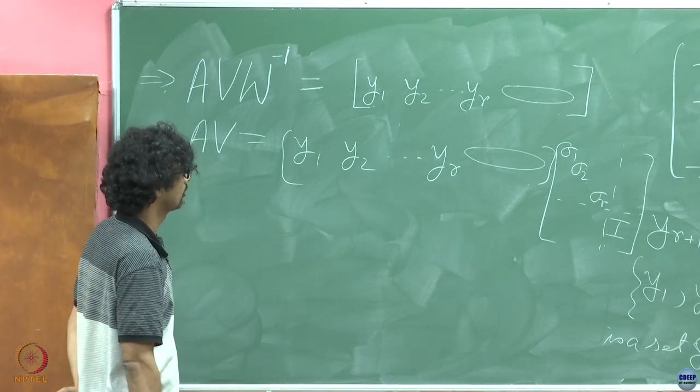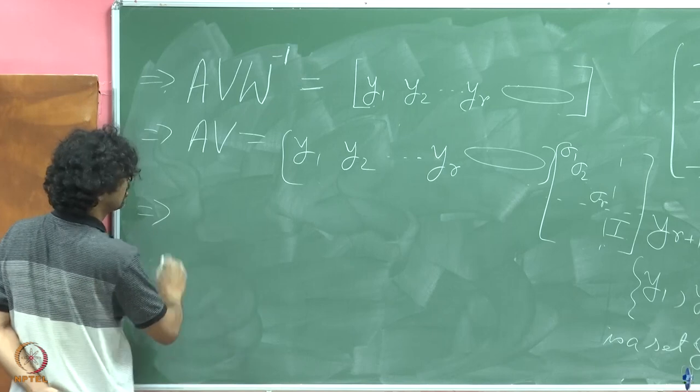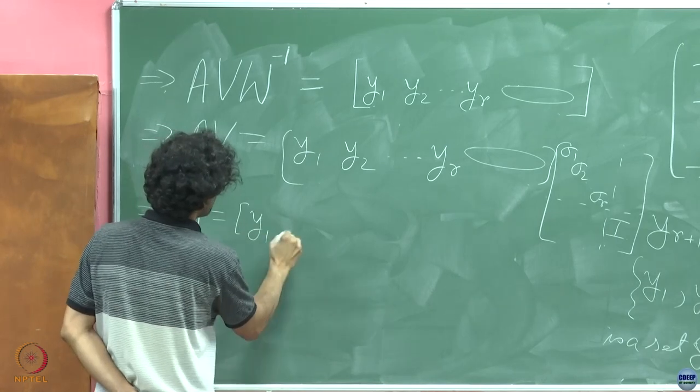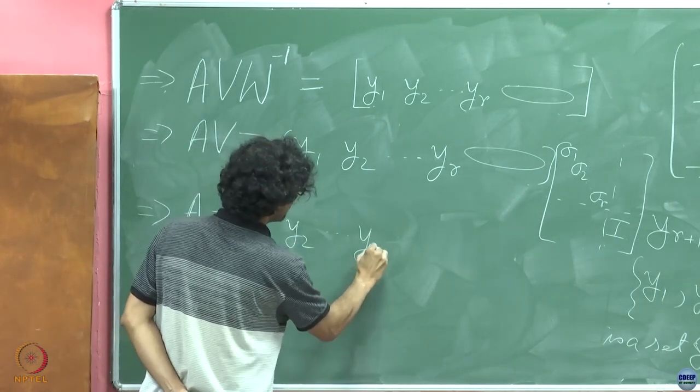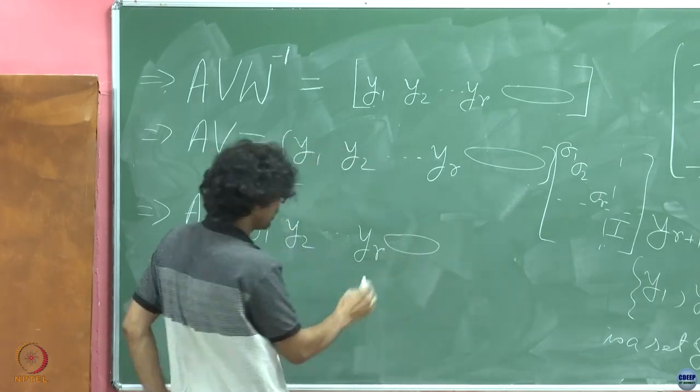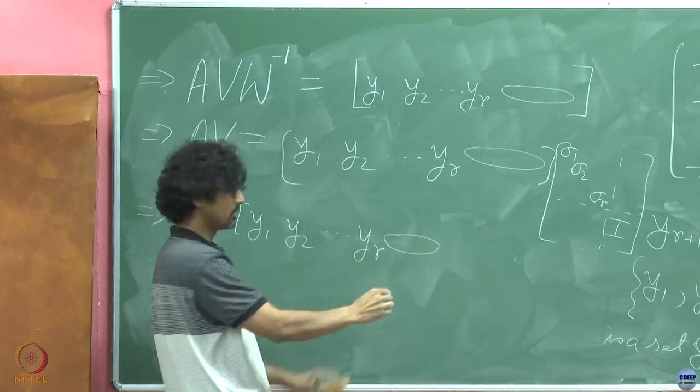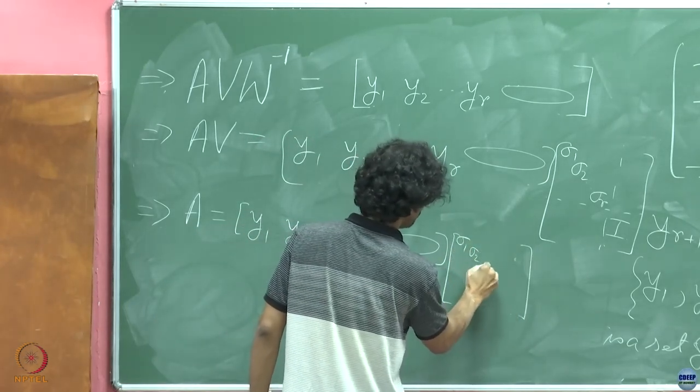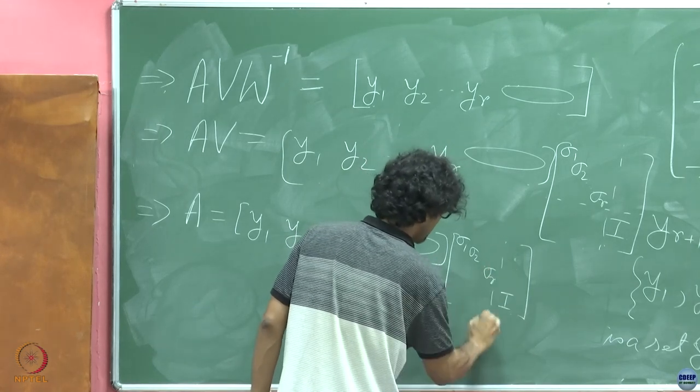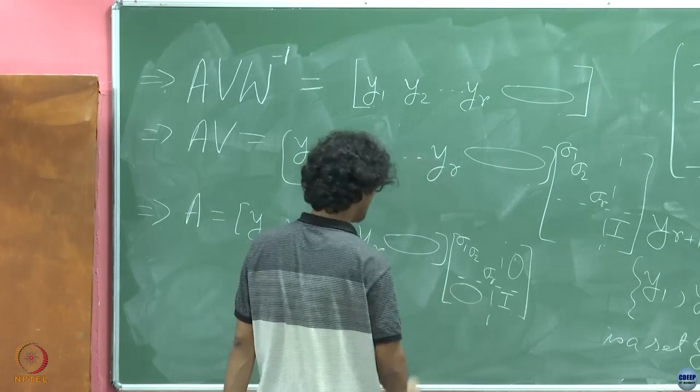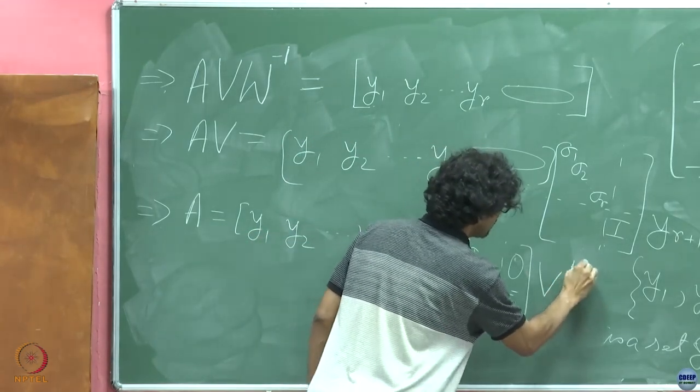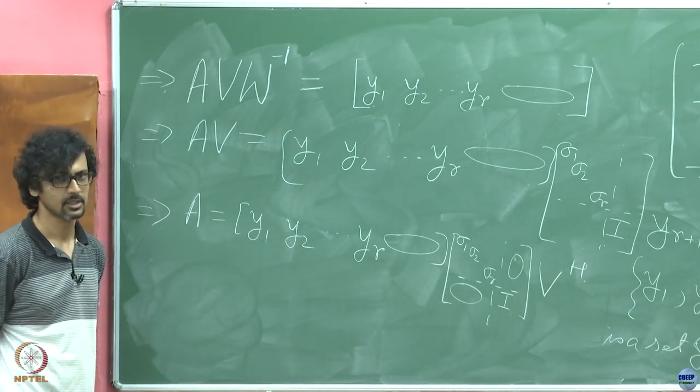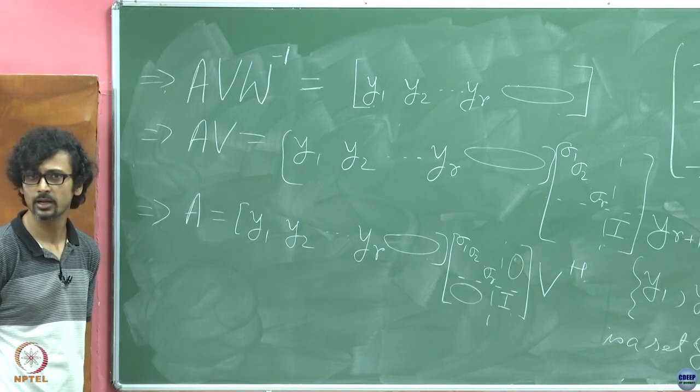So then can I not write this as A equals this y1 y2 till yr augmented with all these 0s? I am constricting it because I have to make room, excuse me for that, but this is sigma 1, sigma 2 till sigma r, then the identity here, 0 here and 0 here and v Hermitian. I am just hitting with v Hermitian on the right on both sides. No issues so far, is all right.